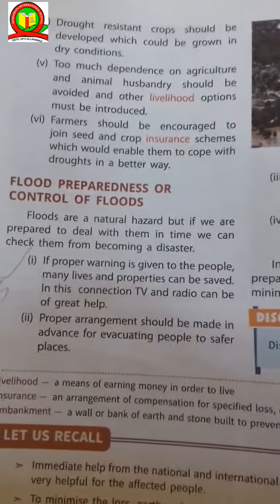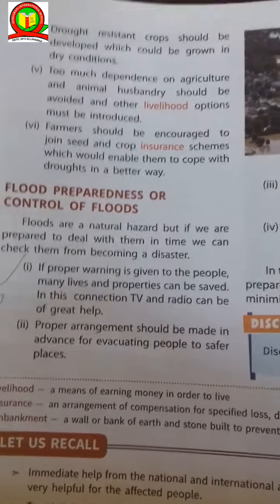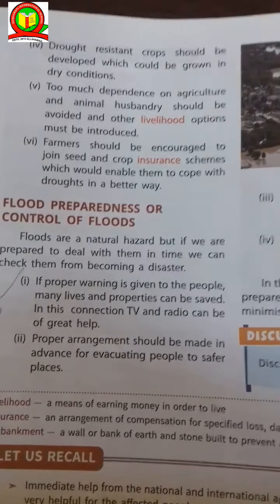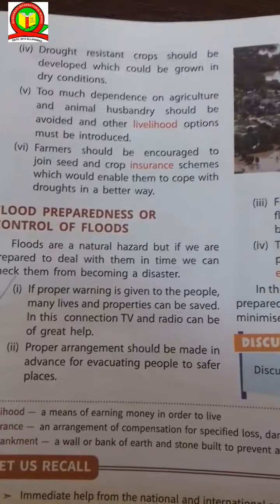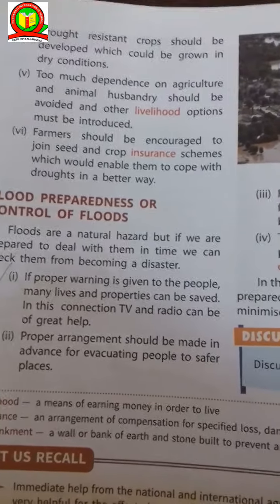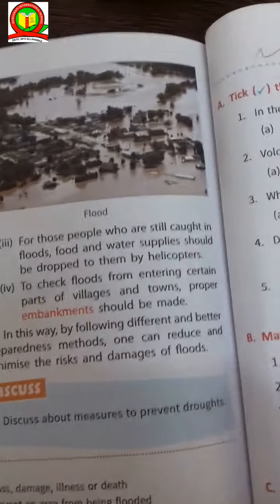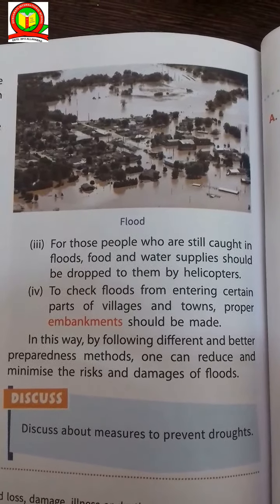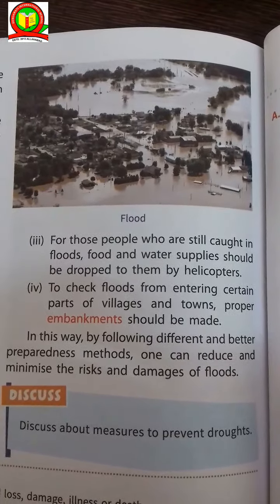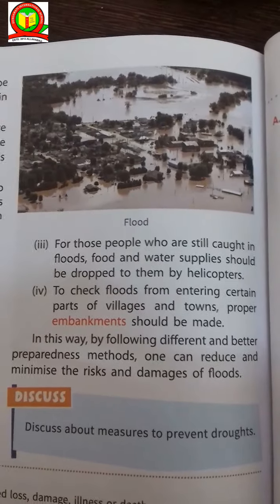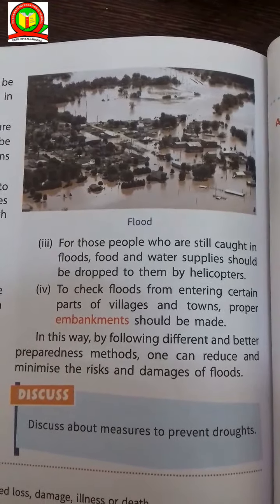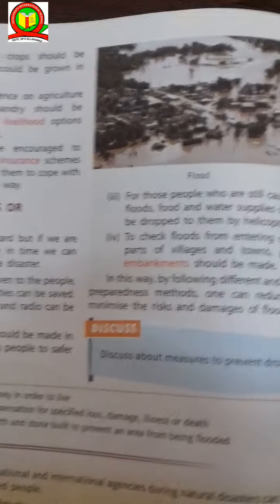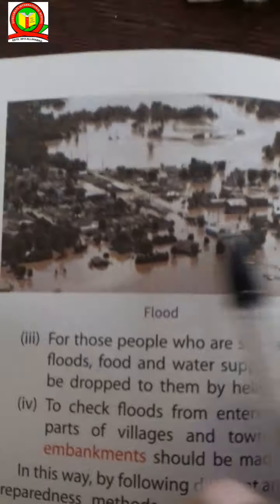Flood preparation and control of floods: proper arrangements should be made in advance for evacuating people to safer places. If proper warning is given to the people, lives and properties can be saved. To check flooding, proper embankments should be made around the central parts of villages and towns. For people still caught in floods, food and water supplies should be dropped to them by helicopters. Here you can see the flood areas.